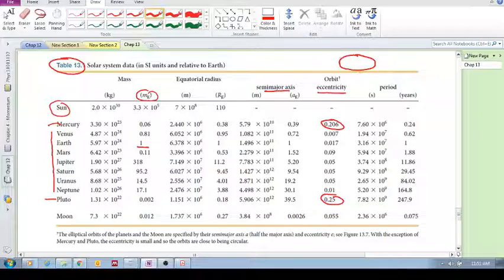And I think another thing to take away is that the more elliptical, you are going to have large variations in speed. So if the sun is there, for example, and Pluto is moving like this, it's going to have large variations in speed between this point and that point.